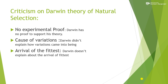Today we will study the criticisms on Darwin's theory of natural selection. Just as many scientists criticized Lamarck's theory, many scientists also criticized Darwin's theory. The very first criticism was: no experimental proof — Darwin had no proof to support his theory.